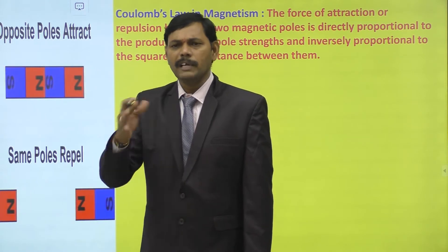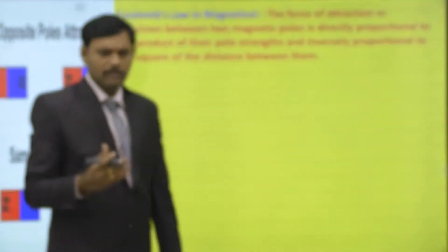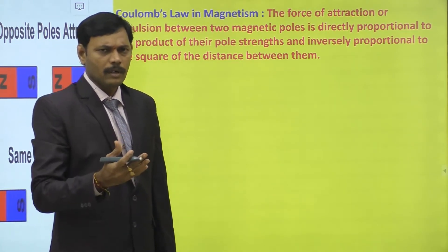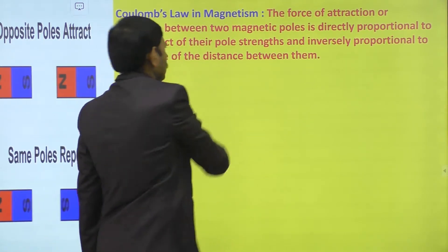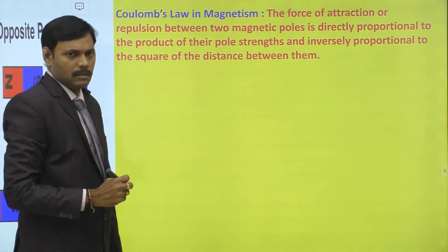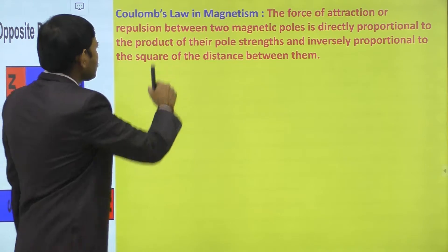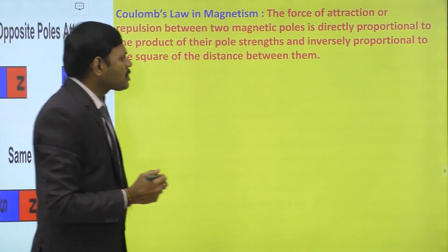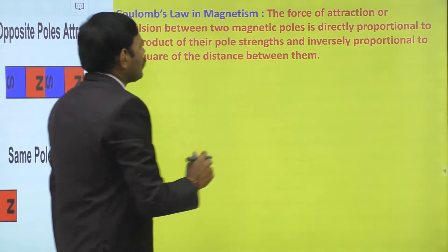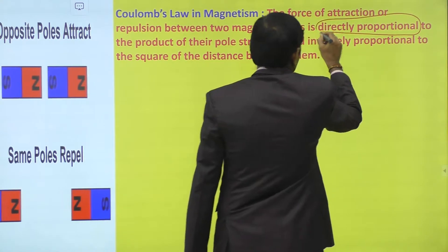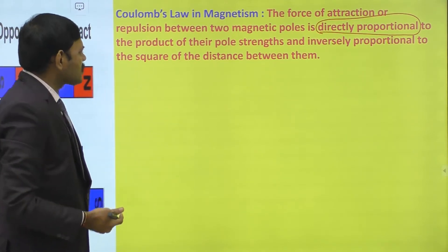The force value is given by Coulomb's Law of Magnetism. The force of attraction — between unlike poles — or force of repulsion — between like poles — between two magnetic poles (north-south, north-north, or south-south): three possible combinations. The force is directly proportional to the product of the pole strengths and inversely proportional to the square of the distance between them.